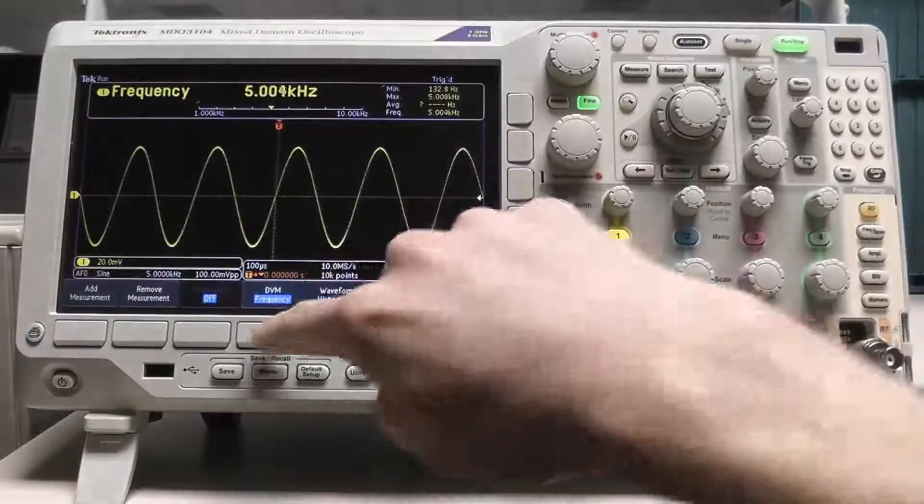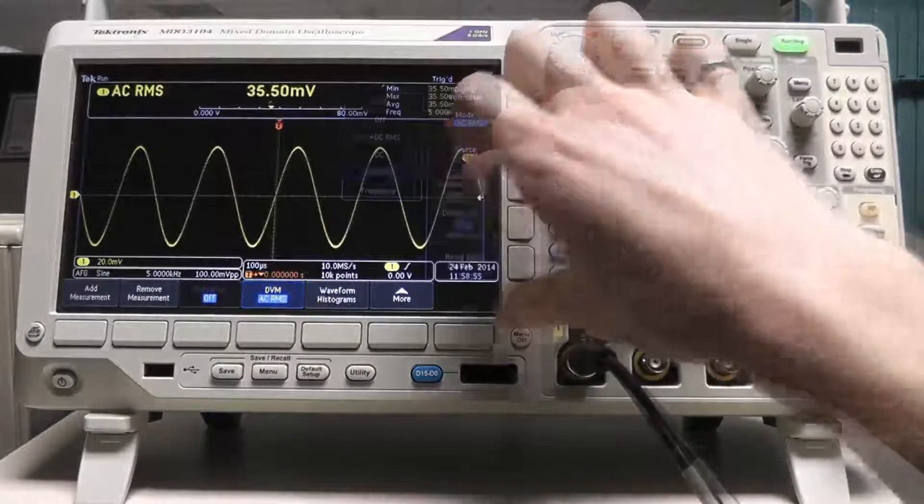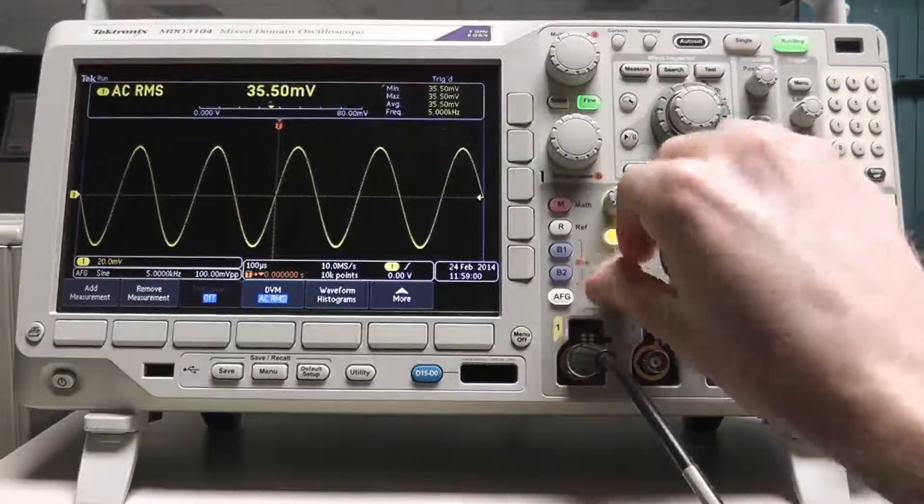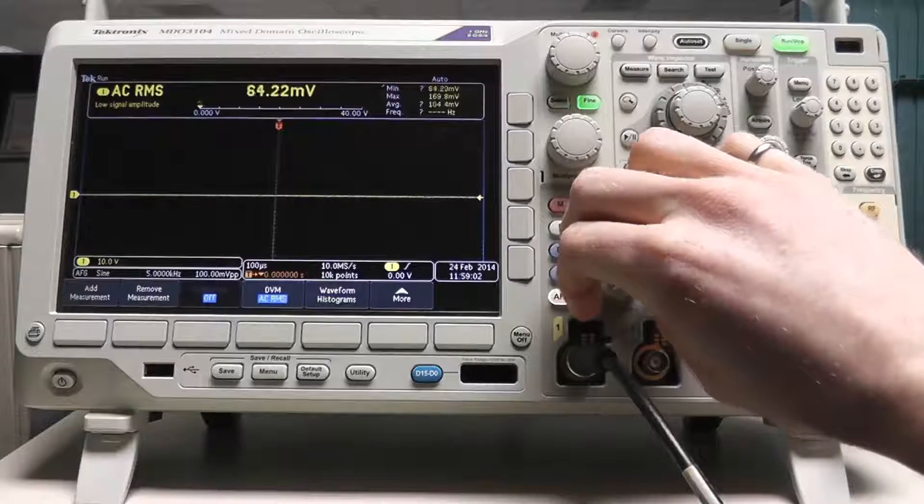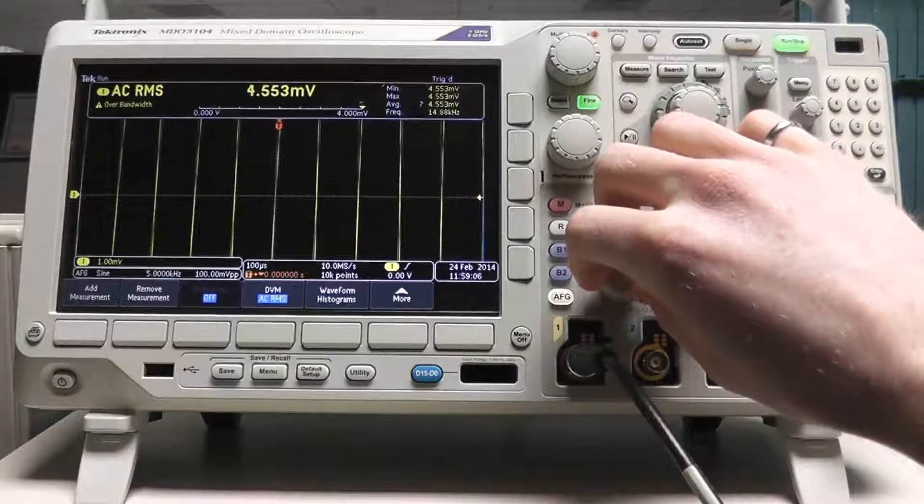Similarly, if you're making an RMS measurement and the vertical range is either too large or too small, the DVM can't make the measurement because the signal is either clipping or it has insufficient amplitude.